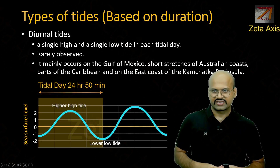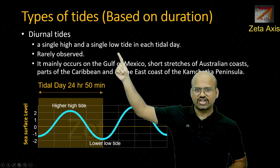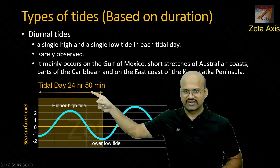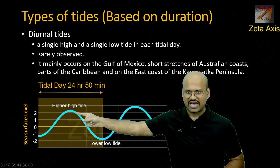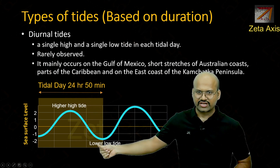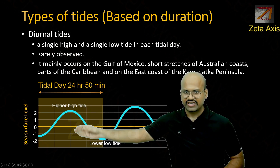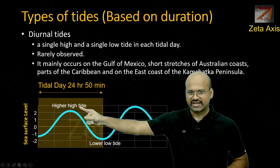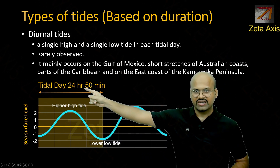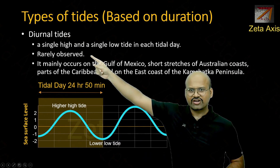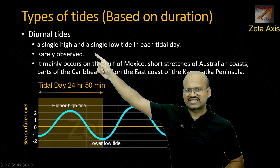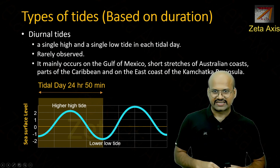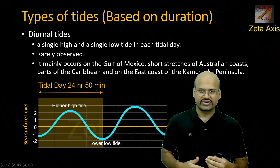Based on these variations, we classify the tides. The first is the diurnal tide — a single high tide and a single low tide in each tidal day of 24 hours and 50 minutes. On the graph, the vertical scale represents sea level, and we can clearly see only one high tide and one low tide in one tidal day. This kind of tidal behavior is rarely observed — it is the rarest type of tide.